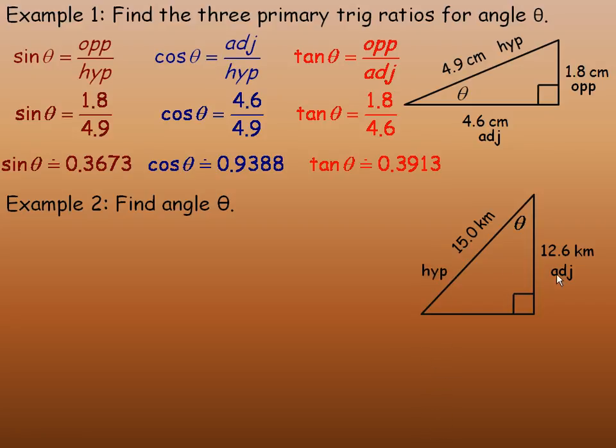So we have the adjacent and the hypotenuse side. So I cannot use sine because sine needs the opposite and the hypotenuse, and I can't use tan either because tan needs the opposite and the adjacent. The trig ratio that does involve both the adjacent side and the hypotenuse is the cos ratio.